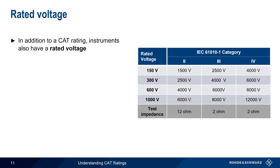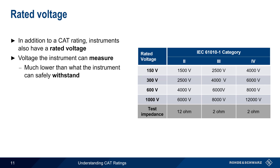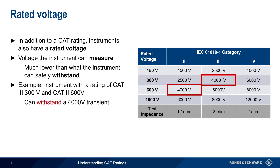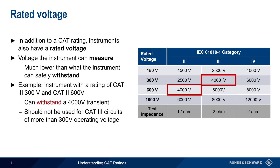In addition to a CAT rating, measuring instruments and accessories will also have a rated voltage. This is the maximum voltage that the instrument can measure, but note that this is a much lower voltage than what the instrument can safely withstand. For example, consider an instrument with both a CAT 3 rated voltage of 300 volts and a CAT 2 rated voltage of 600 volts. Although the instrument can withstand a 4000 volt transient in both cases, it should not be used for CAT 3 circuits with an operating voltage of more than 300 volts, or a CAT 2 circuit with an operating voltage of more than 600 volts. And since it does not have a CAT 4 rating, it should never be used in a CAT 4 environment, regardless of the voltage.